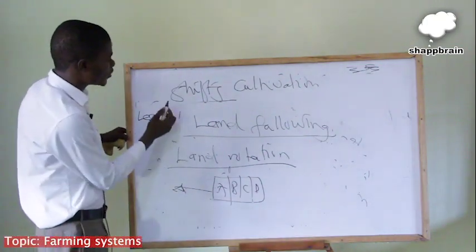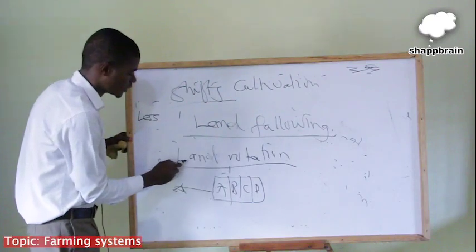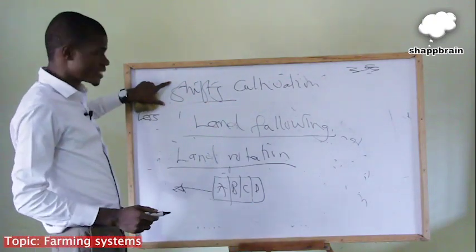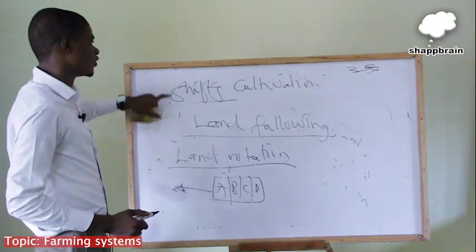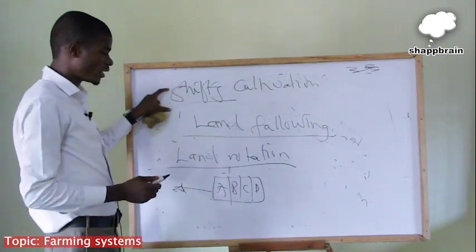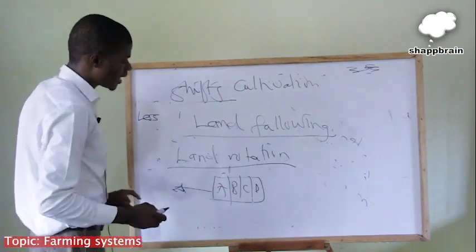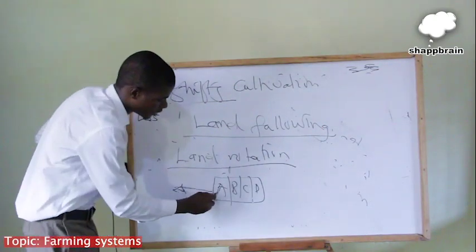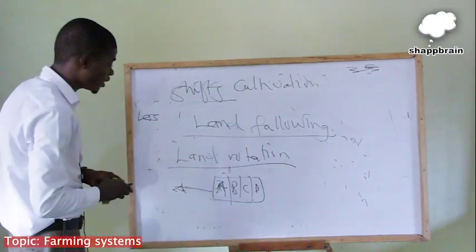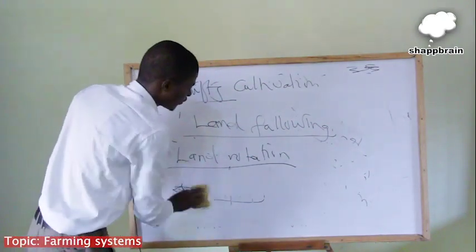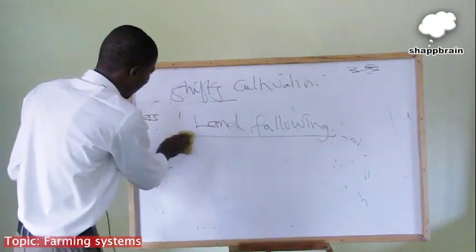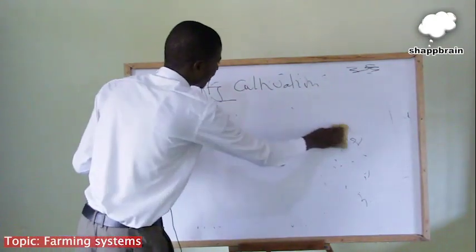The difference between shifting cultivation and land rotation is that for shifting cultivation, the farmer moves with their settlement and has no intention of going back to their previously left land. For land rotation, the farmer has an intention of going back to their previously tilled land after it has regained its fertility or nutrients.